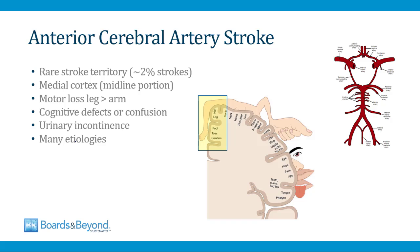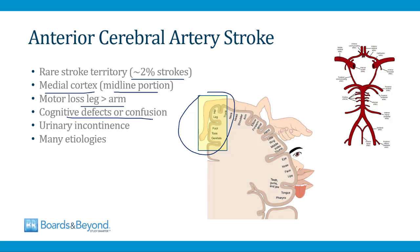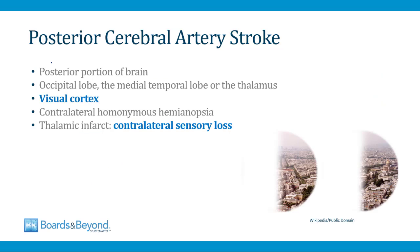Anterior cerebral artery strokes are rare, accounting for only about 2% of strokes. They affect the medial cortex, so there will be motor loss of the leg more than the arm. The ACA also supplies the frontal lobe, so ischemia there can lead to cognitive deficits or confusion, and these patients often develop urinary incontinence as well. ACA strokes can also occur because of carotid artery disease, since the ACA is part of the anterior circulation.